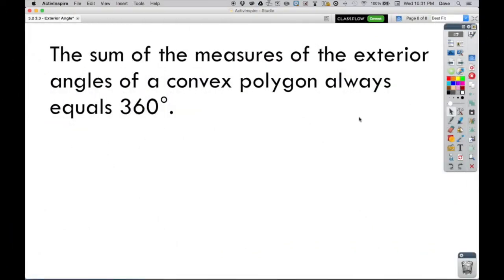All right. So because of this, it always turns out that the sum of the measures of the exterior angles of any convex polygon, and again, only convex, always adds up to 360. So it doesn't matter if it's got 10 sides, 200 sides, 3 sides. Those angles always add up to 360 degrees.